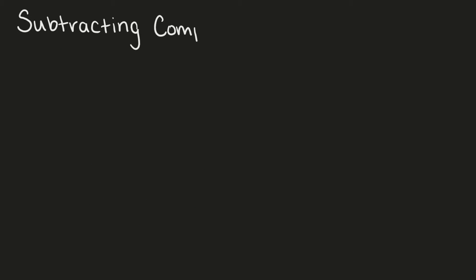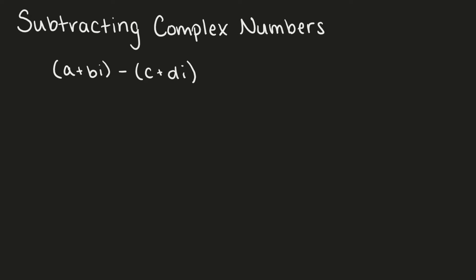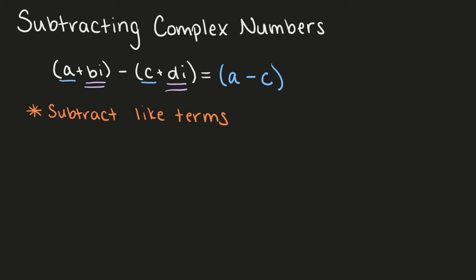Next, let's look at subtracting complex numbers. Subtracting complex numbers is just like adding them. We're going to combine our like terms, except instead of adding we're going to subtract our like terms. So if we have a plus bi minus c plus di, a and c are like terms, bi and di are like terms, and our solution is going to be a minus c plus bi minus di.